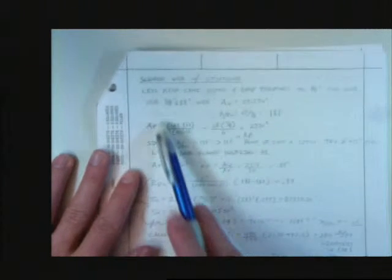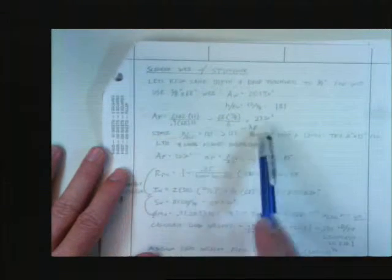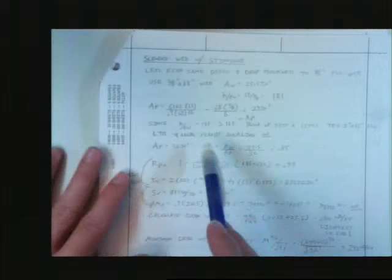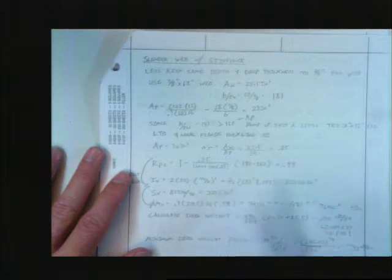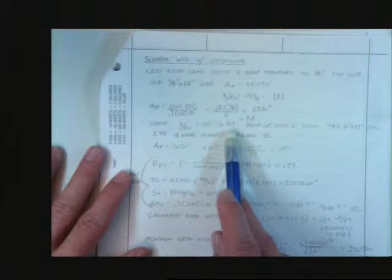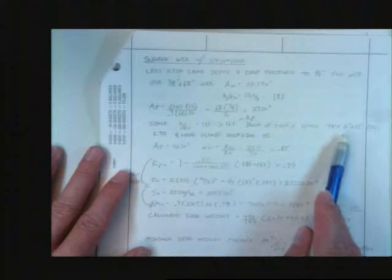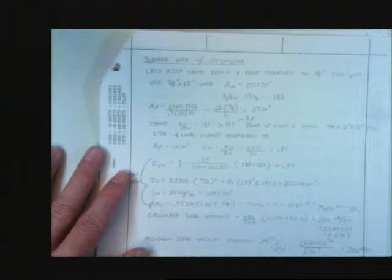So we're going to use a three-eighths inch by 68 inch web. Area of the web. There's my H over T sub W. Here's my area of the flange. Since H over T sub W is 181, I go bump this up a little bit. I said, okay. What I did is I said, you know what? I'm close to this slender zone. I'm going to bump this up a little bit. I'm going to make this a little bit larger. Make this a little bit bigger.